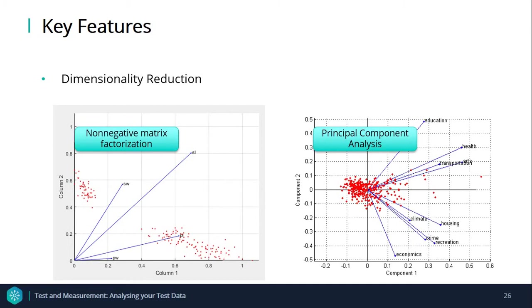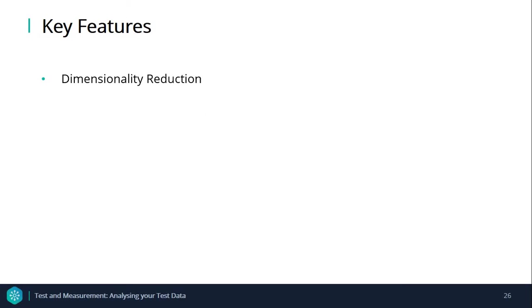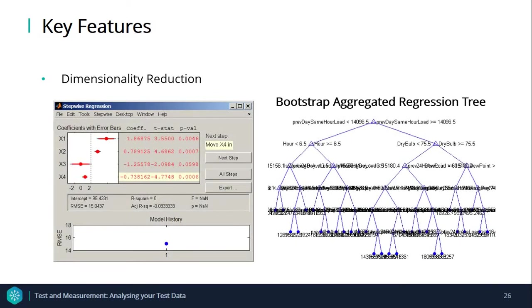The second technique is feature selection, which selects only the subset of measured features that provide the best predictor power in modeling the data. Four features worth mentioning when working with high-dimensional data are stepwise regression, sequential feature selection, boosted and bagged decision tree, and regularization.